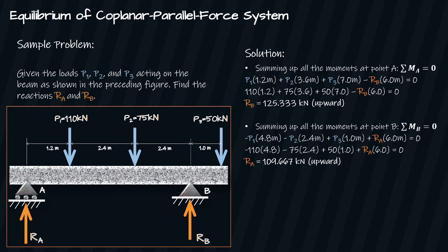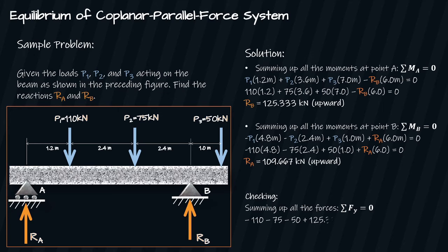Let's check our work by summing up all the forces: summation of Fy equals zero. Substituting our computed values of RA and RB confirms the equilibrium condition is satisfied — we are correct.